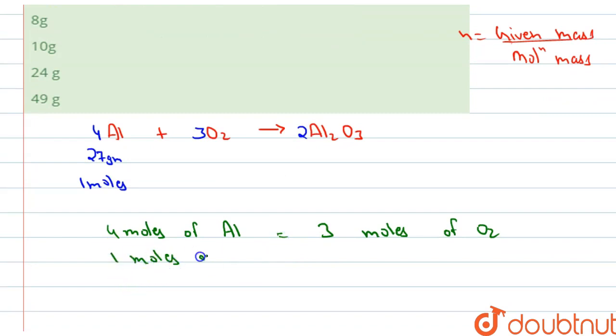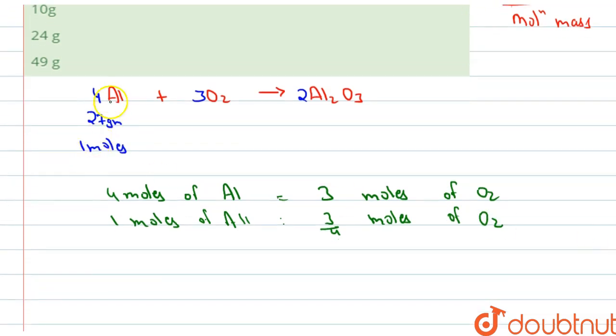If 1 mole of aluminum is used, this will take 3 by 4 moles of O2. So moles of oxygen will be 3 by 4.